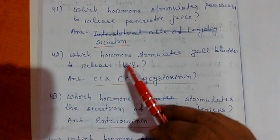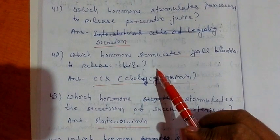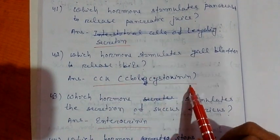Question number 42. Which hormone stimulates gallbladder to release bile? That is CCK, cholecystokinin.